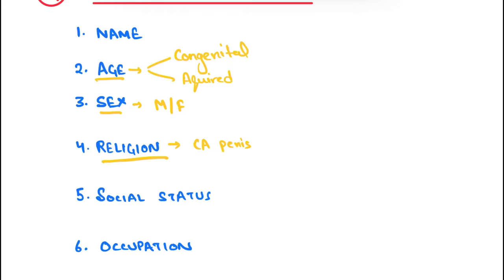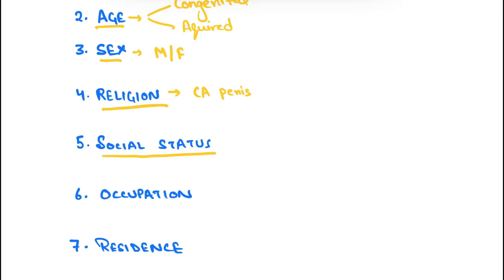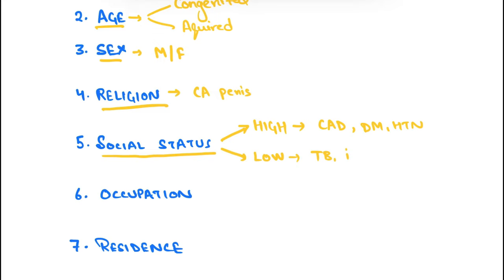Coming to socioeconomic status — this is also an important part. There are two types: high and low socioeconomic status. In high socioeconomic status, diseases like cardiovascular disease, CAD, diabetes mellitus, and hypertension are more common. In low socioeconomic status, due to overcrowding and hygiene-related problems, tuberculosis and other infections are more common.